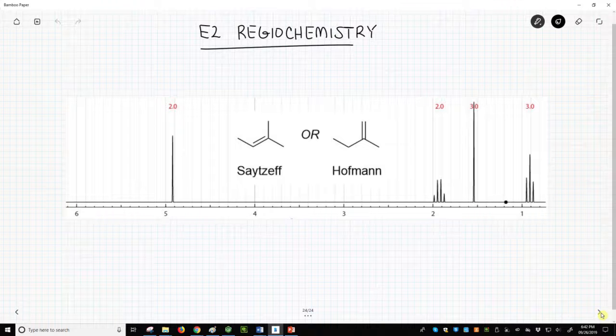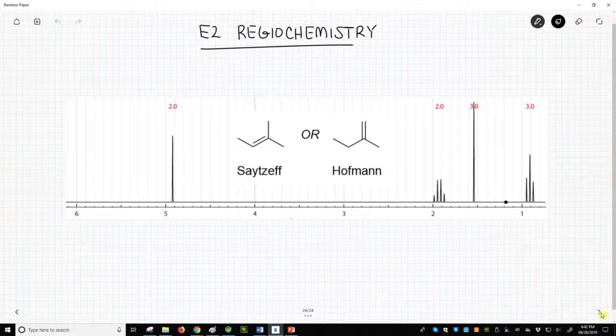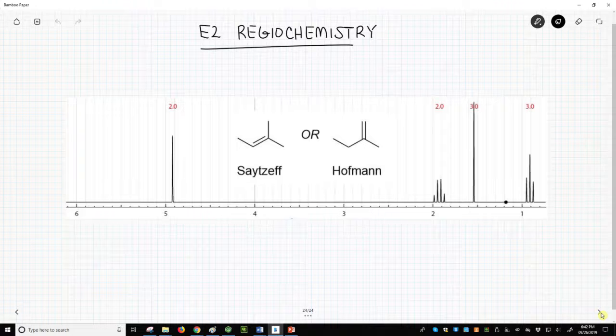Here is the spectrum generated by nmrdb.org. So who is correct? Is this the spectrum of the Saytzeff product or the Hofmann product?